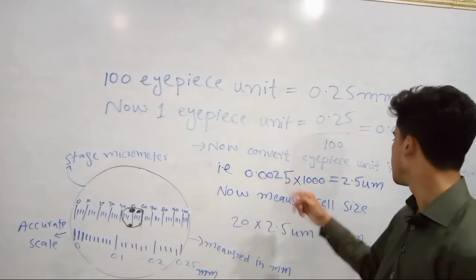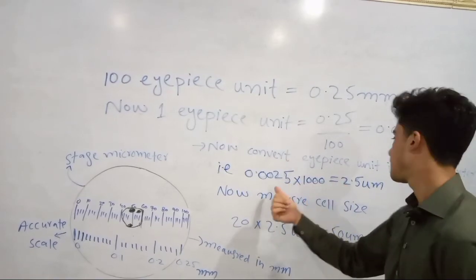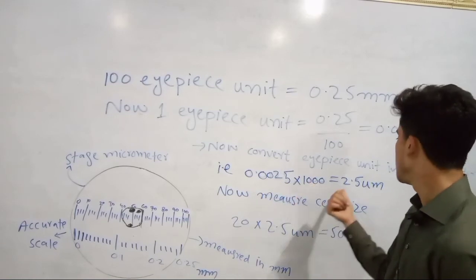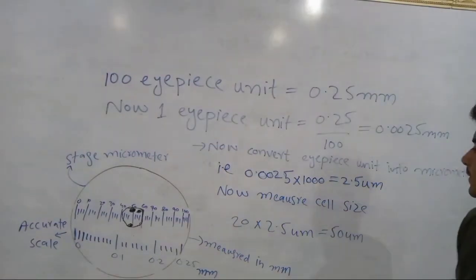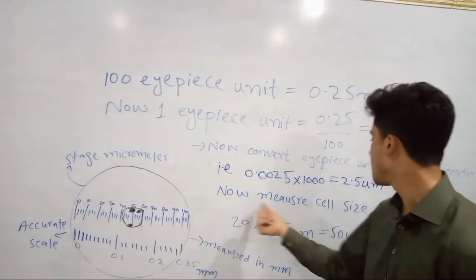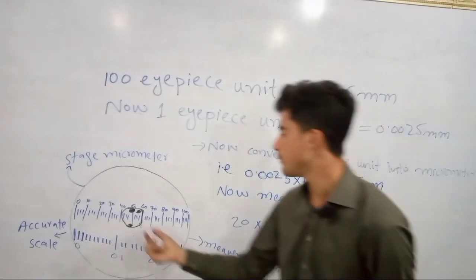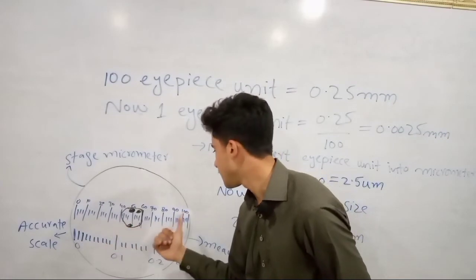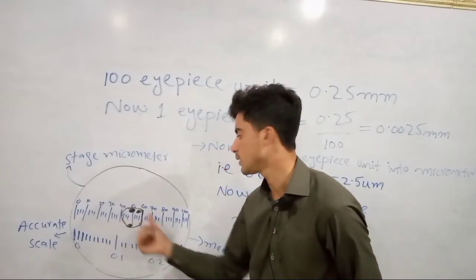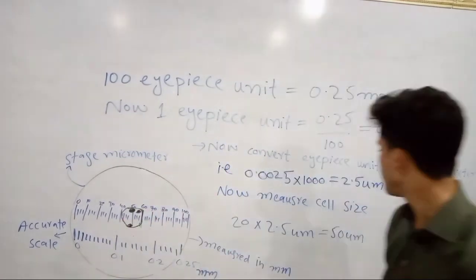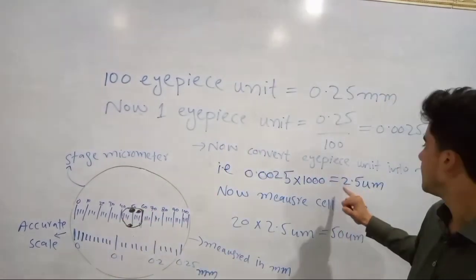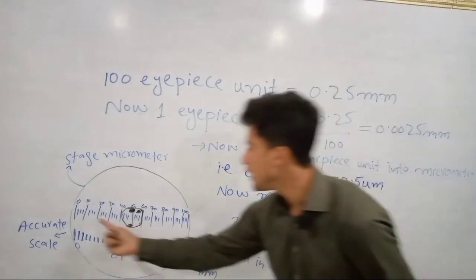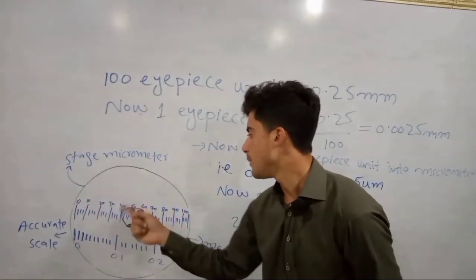Now convert: 0.025 times 100 equals 2.5 micrometers. That's 20 units. Now we have 2.5 micrometers. That's 2.5 micrometers per unit.